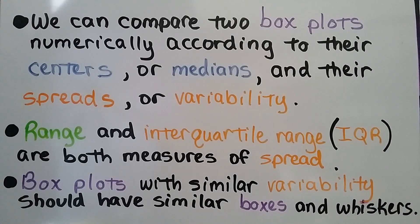Range and interquartile range, the IQR, are both measures of spread. And box plots with similar variability should have similar boxes and whiskers.